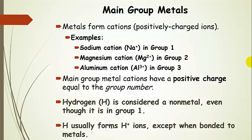Magnesium is in group 2, forms a plus 2 cation. And aluminum is in group 3, forms a plus 3 cation. Main group metal cations have a positive charge equal to the group number, and that especially applies to groups 1 and 2.